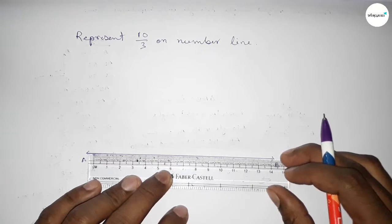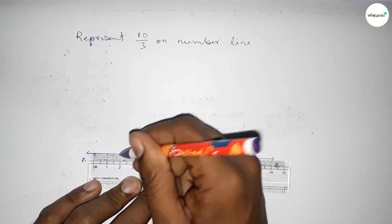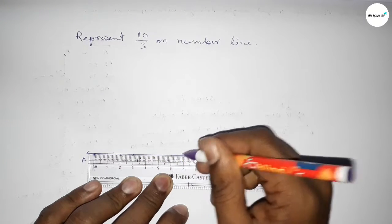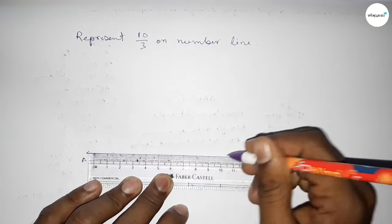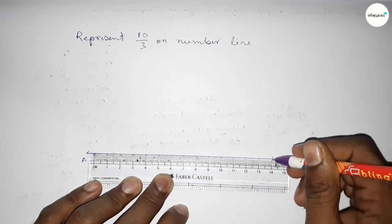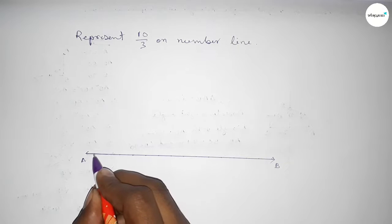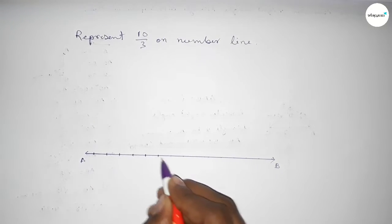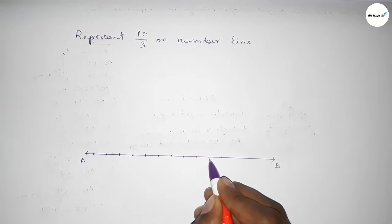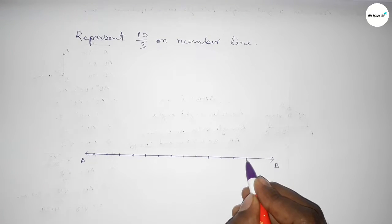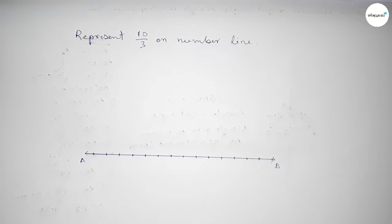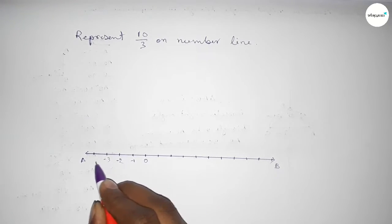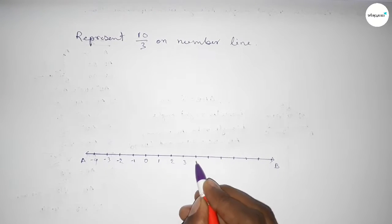Next, we mark the numbers on the line using a scale. We mark the numbers with deep color to understand perfectly. Starting from zero, on the left side: minus one, minus two, minus three, minus four; and on the right side: one, two, three, four, five, six, seven, eight, nine, ten.